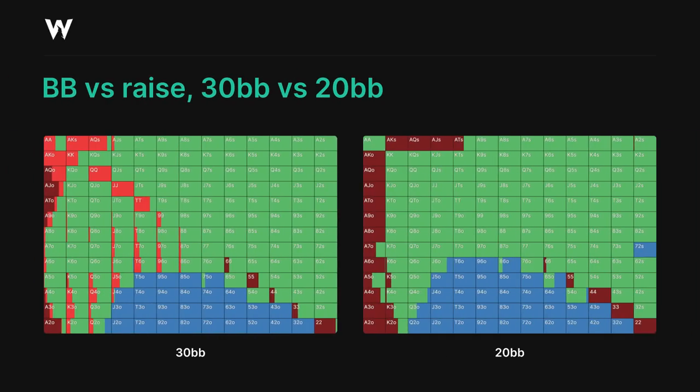Once we compare 30 big blinds to 20 big blinds, we can see the impact of the 25 big blind pivot point. We're no longer 3-betting to a non-all-in size. Our jamming range is heavily composed of low pairs and offsuit aces now, almost exclusively in fact, with some of the strongest suited aces also jamming for pure value. We no longer have to worry about constructing a 3-bet bluff range — it's just an all-in.